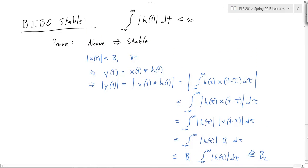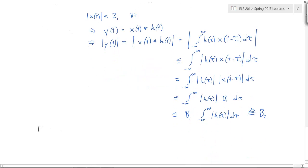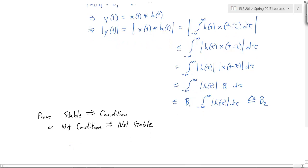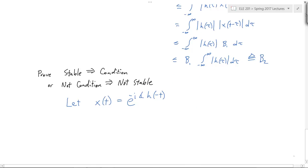But how do we know that's the sharp condition? In other words, the opposite direction as well. If that's not true, is it truly not stable? And that's true. So, prove that stable implies condition. Of course, that means or not condition implies not stable. So, the objective here is to design x of t to make the output blow up.